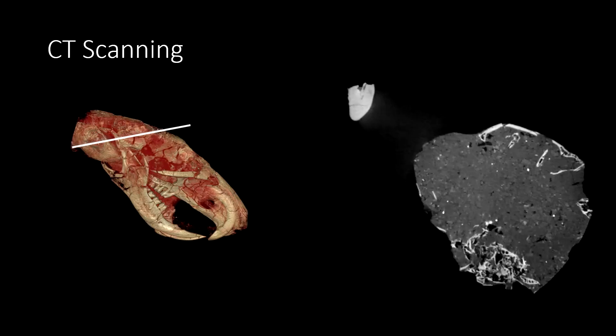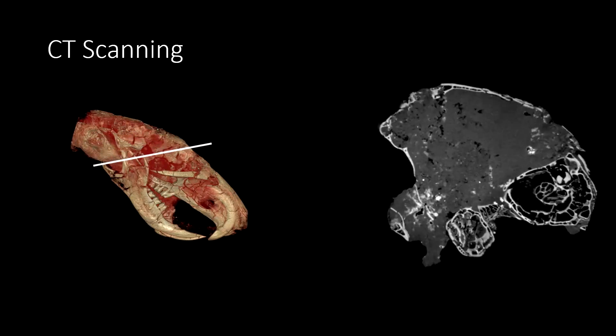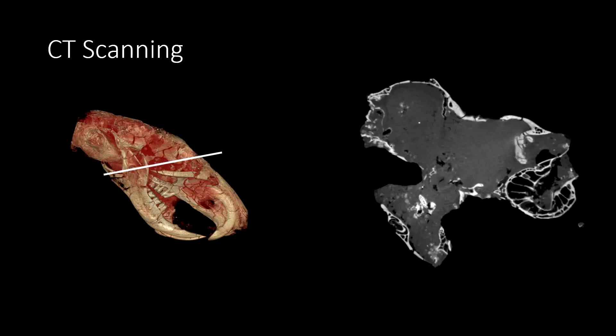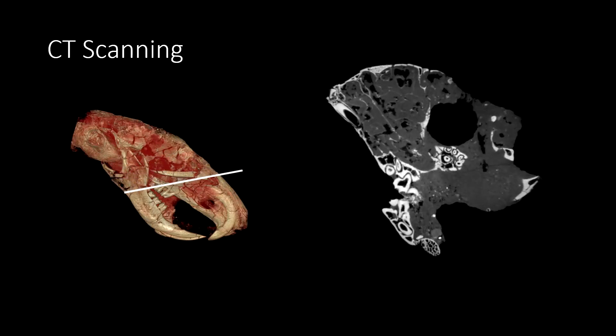You can see the slices are moving through the brain case, up into the nostril, and then you can start seeing some of the teeth in this rodent skull.